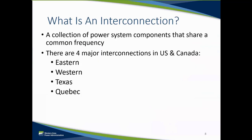Today, the bulk electric system spreads across the U.S., Canada, and parts of Mexico and is made up of four distinct interconnections: the Eastern Interconnection, the Western Interconnection, the Texas Interconnection, and the Quebec Interconnection. WAPA, at that time the Bureau of Reclamation, played and continues to play a major role in the construction and operation of a large portion of the generation and transmission that has interconnected and powered the Western Interconnection.